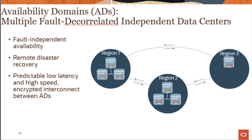Customers can choose to deploy their application across multiple ADs — for example in region 1 — thus getting very highly available applications. Even in regions where there is only one AD, there is a fault tolerance mechanism built in. Regions are interconnected as well, so high availability can be achieved by creating disaster recovery deployments in multiple regions.